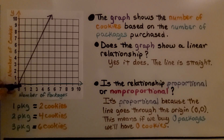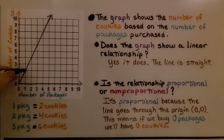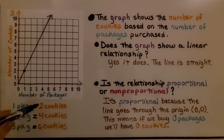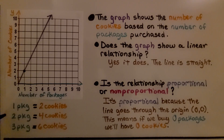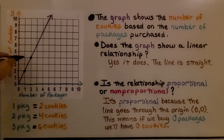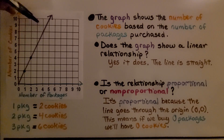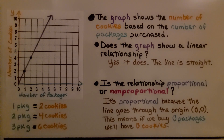If you look, where x is one, y is two — that means if we buy one package, we're going to get two cookies. And since it's proportional, if we buy two packages, we'll get four cookies. Three packages is six cookies, four packages is eight cookies, five packages is ten cookies. It's proportional.